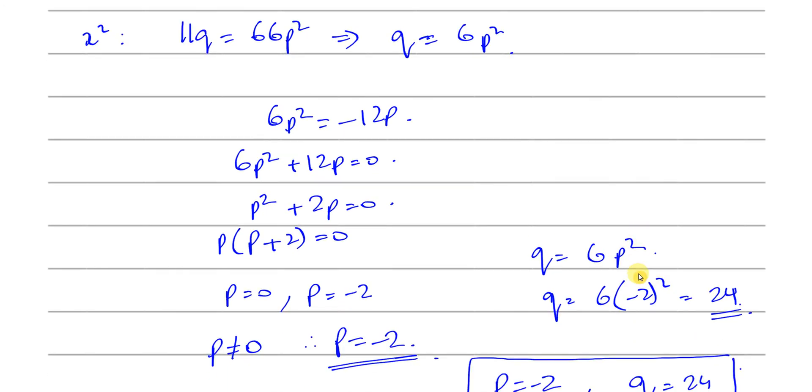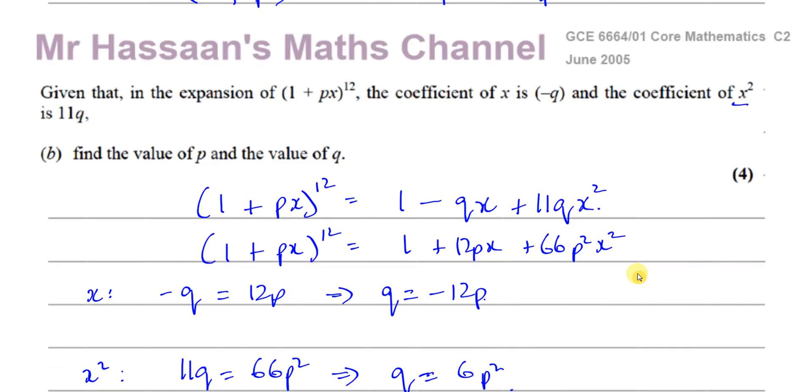That's the value of P and the value of Q. Minus 2 and 24. And that's the answer to this question.